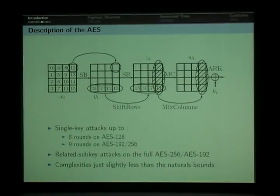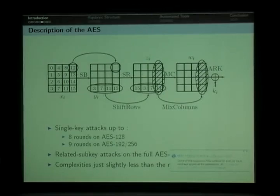Against these constructions, I am aware of an attack on 8 rounds on the AES-128. Cryptanalysts can go one more round on the larger versions. In the related-key model or related sub-key model, there are attacks on the full AES-256. But the complexity of all these attacks are just slightly less than the natural bounds of exhaustive search and the full codebook.